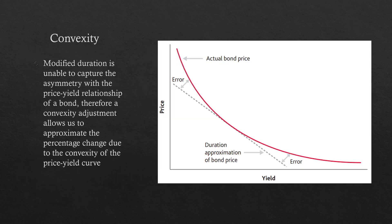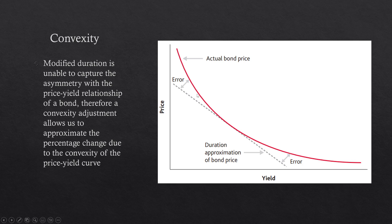You also have convexity. Duration as calculated looks at a straight line — the duration approximation of a bond price shows a straight line based on price and yield, whereas the actual bond price has a curved relationship. That's why you add convexity to approximate that error margin. Modified duration is unable to capture the asymmetry in the price-yield relationship of a bond. Therefore, a convexity adjustment allows us to approximate the percentage change due to the convexity of the price-yield curve.